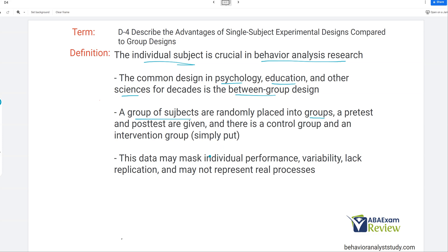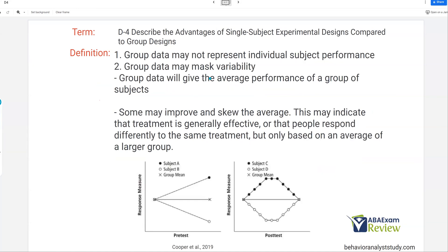It's almost like we are emphasizing the individual over the group in single-subject design. Now, why do we do this, and what is the advantage? Well, group data could mask individual performance. It masks variability across different individuals. It lacks replication and may not represent real processes. We're not saying group designs are bad, but here are some reasons single-subject gives us an advantage. So let's start with one and two. Number one, group data may not represent individual subject performance. Number two, group data may mask variability.